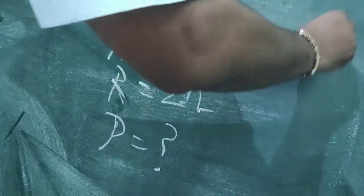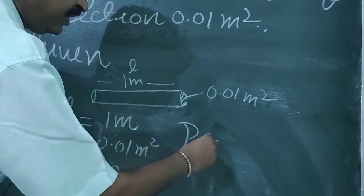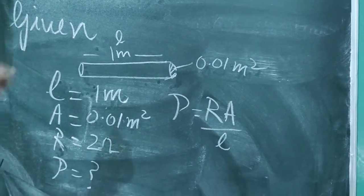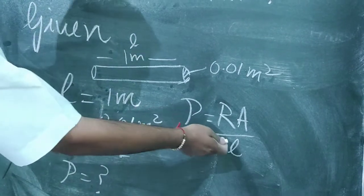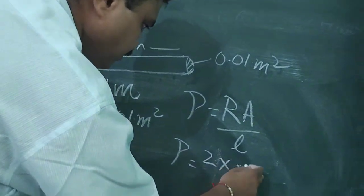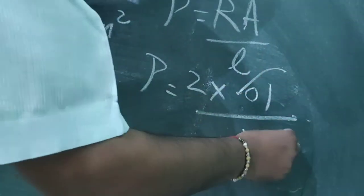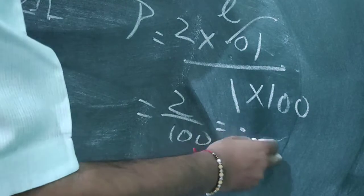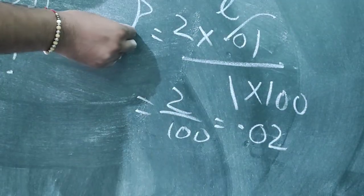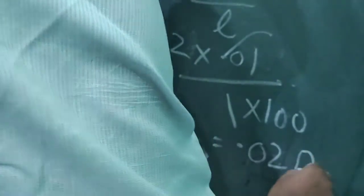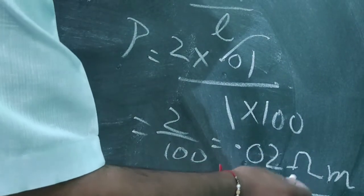We apply the formula for resistivity: ρ = R × A / L. Putting in all the values: resistance is 2 ohm, area is 0.01, and length is 1. To handle the decimal, we write 0.01 as 1/100, giving ρ = 2/100 = 0.02. The unit of resistivity is ohm meter. So the answer is 0.02 ohm meter.